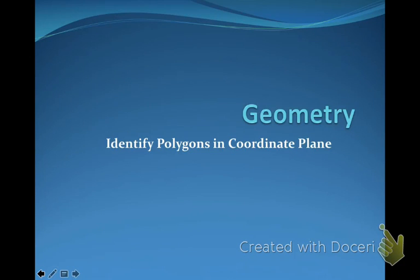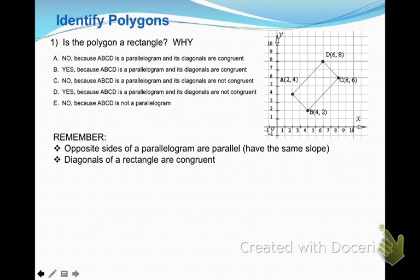We're going to identify polygons — what type of polygons we have — but this time they're going to be in a coordinate plane. In this particular instance, they've given us a shape and they're asking us if this polygon is a rectangle, and then why.